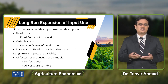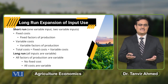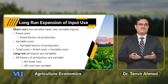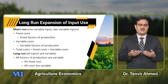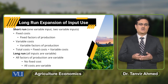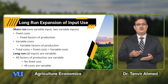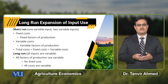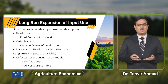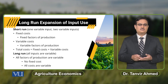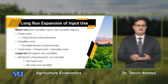In the long run, there is no factor of production which we call a fixed factor of production. When there is no fixed factor, there is no fixed cost. So all costs under the long run are variable costs.